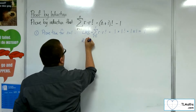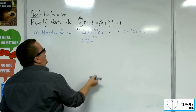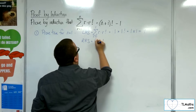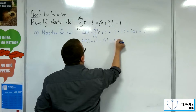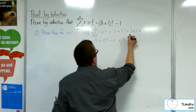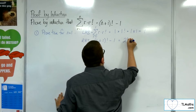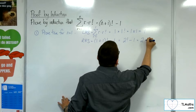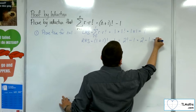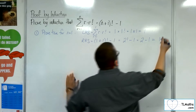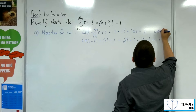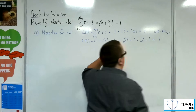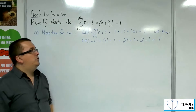Now for the right-hand side: substituting N equals 1, we get 1 plus 1 factorial take away 1. That's 2 factorial take away 1. Two factorial is 1 times 2, which is 2, and 2 take away 1 is 1. So the left-hand side equals the right-hand side, and that's all checked out and is true.